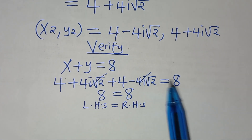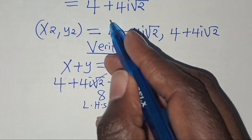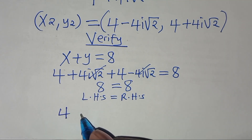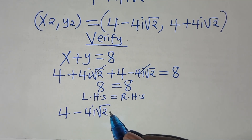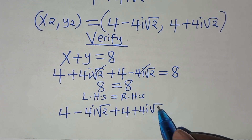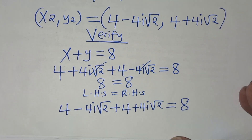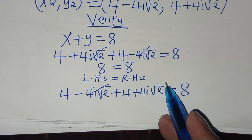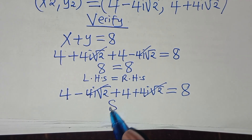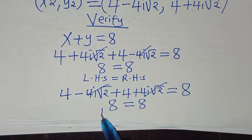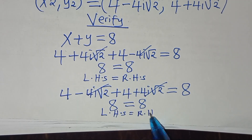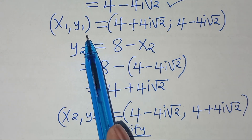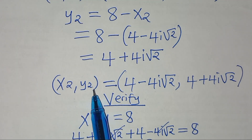Now confirming x2 and y2: (4 minus 4i root 2) plus (4 plus 4i root 2) equals 8. Again the imaginary terms cancel, giving 4 plus 4 equals 8, which is correct. So we have two valid solution sets: x1, y1 and x2, y2.